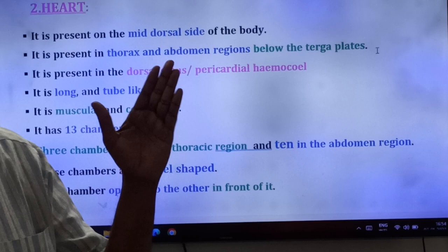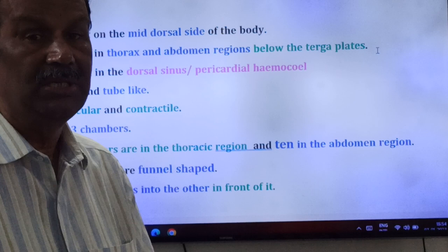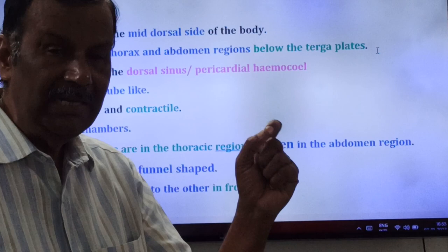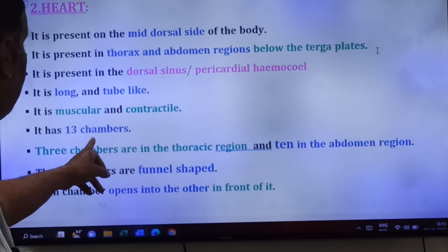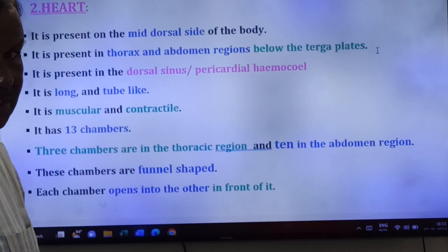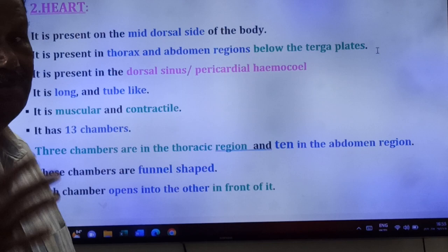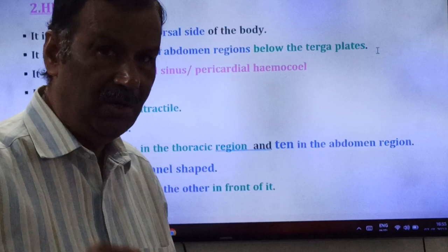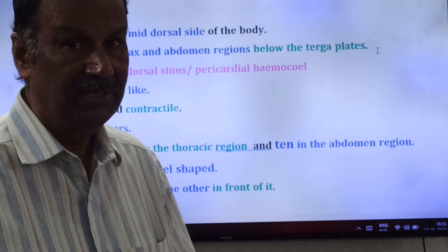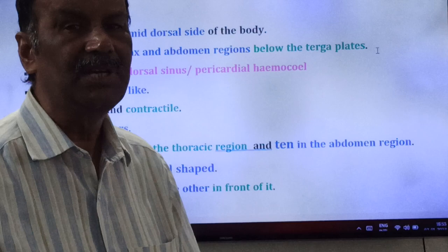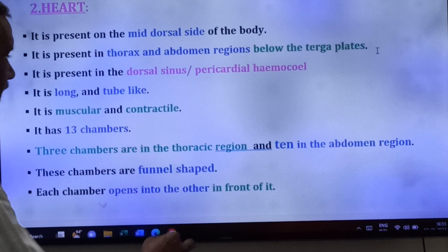The heart of Periplaneta americana has 13 chambers. Out of these 13 chambers, 3 chambers are present in the thoracic region and 10 chambers are present in the abdominal region. The chambers are funnel-shaped, and each chamber opens into the other in front of it.